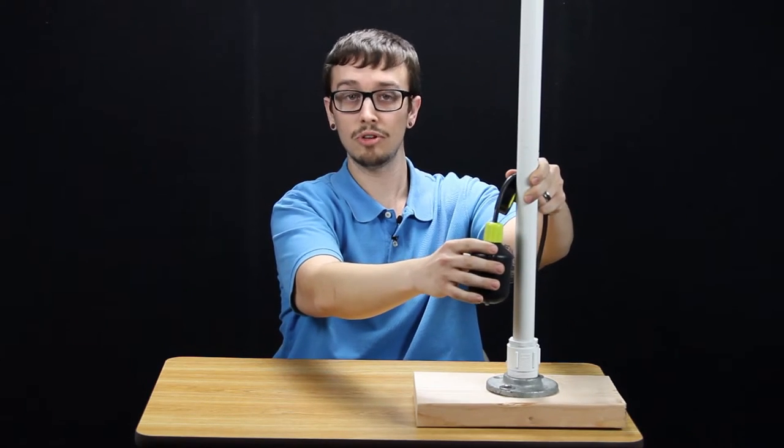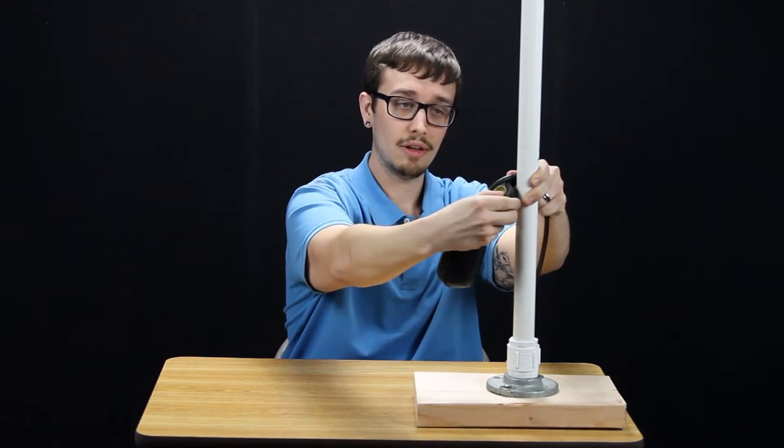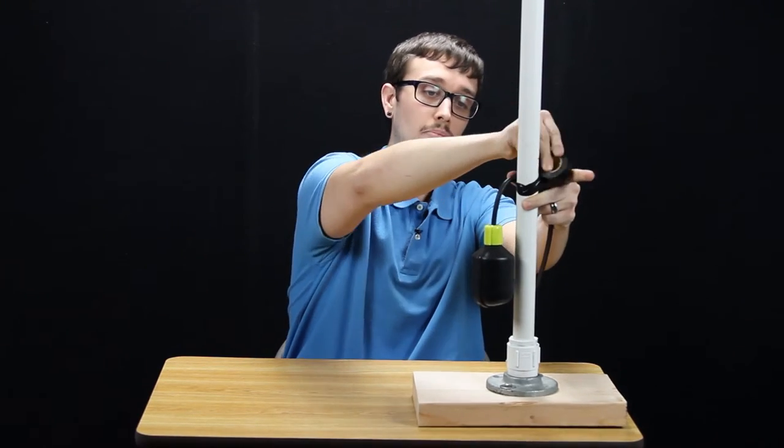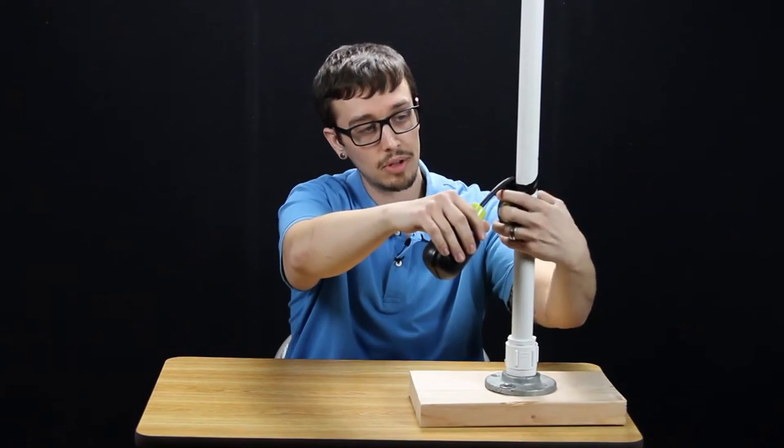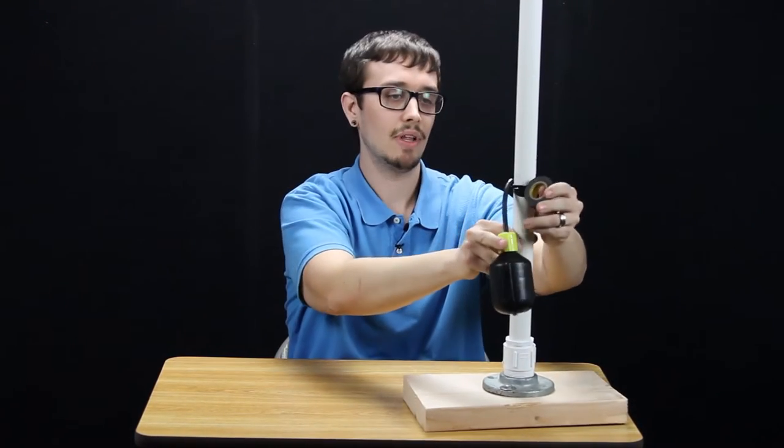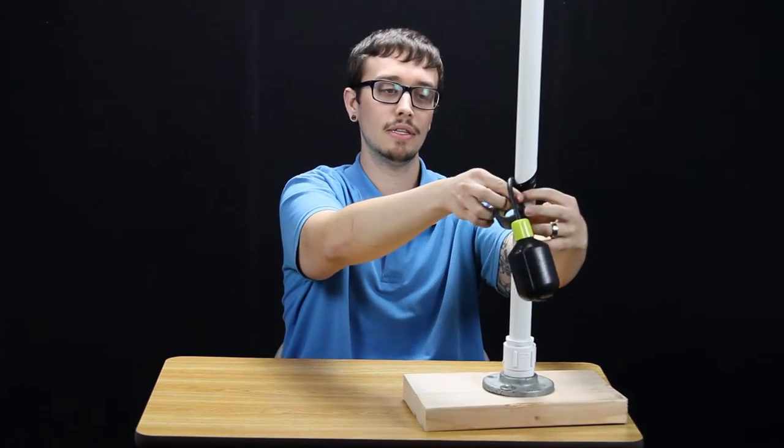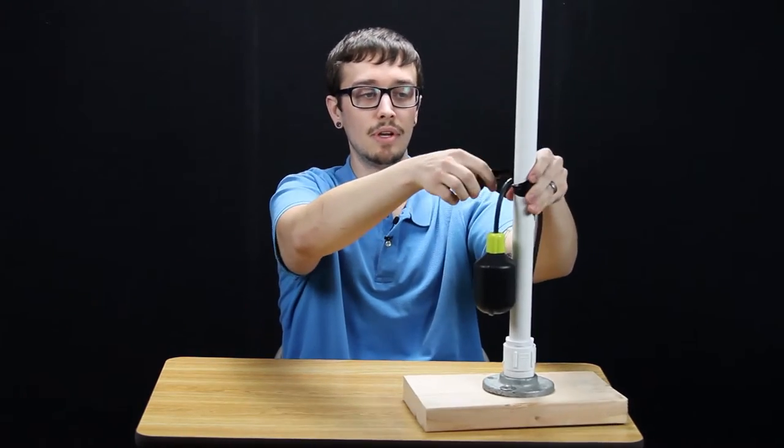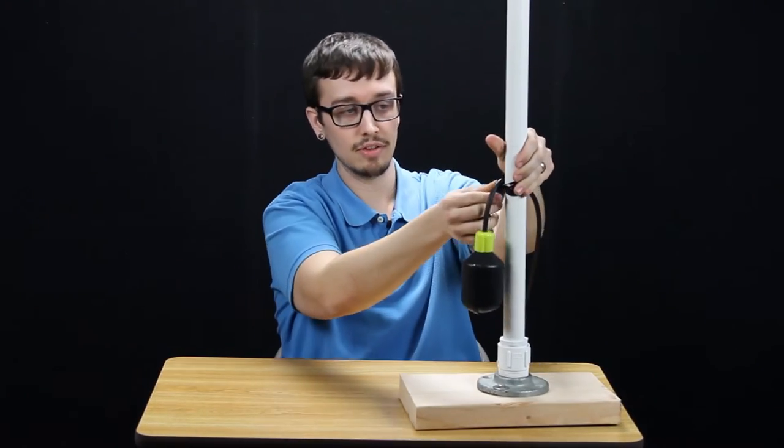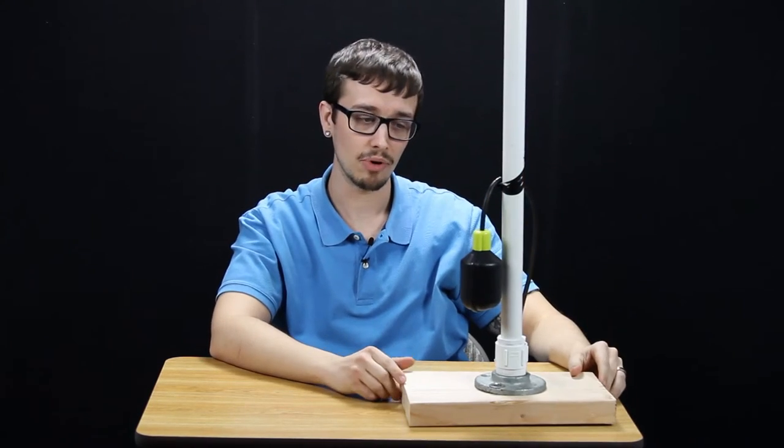Of course, this isn't going to be adjustable like a pipe clamp would be, so you want to get your final point set and then go ahead and wrap that with tape a number of times. I typically like to wrap it about five or six times to ensure that the tape is going to hold and that the float switch isn't going to fall off and the tape's not going to fall off and get sucked up by the pump or anything like that.